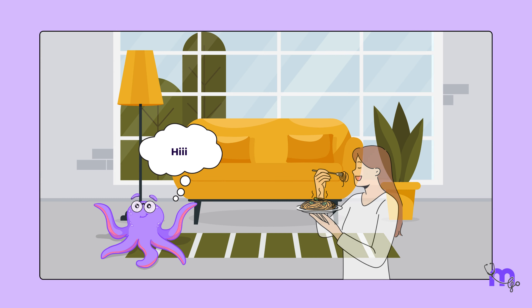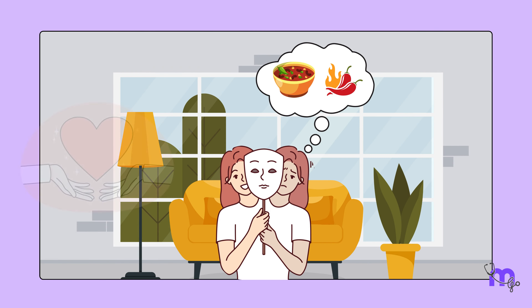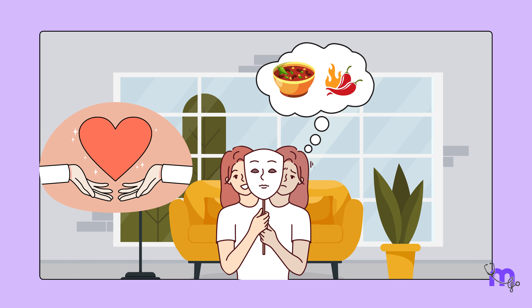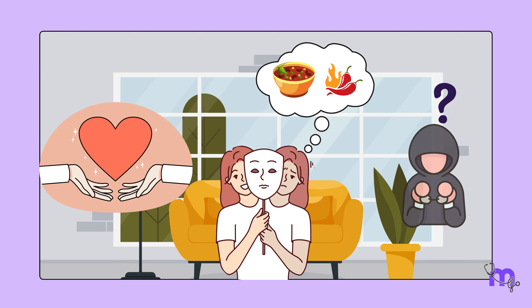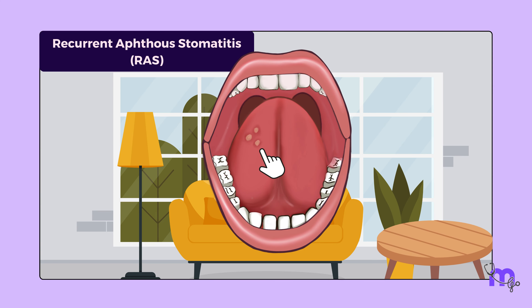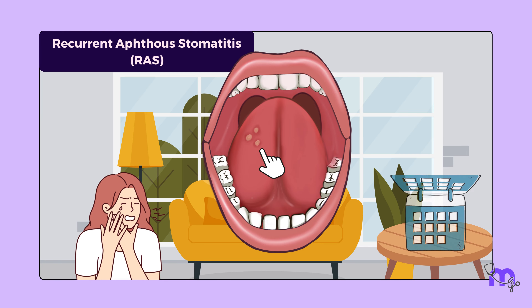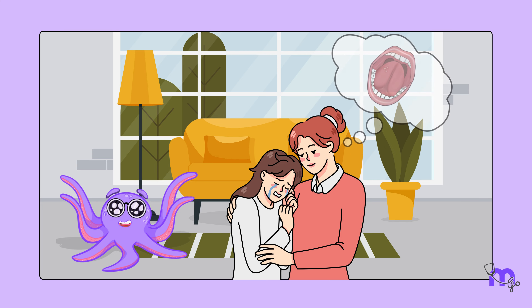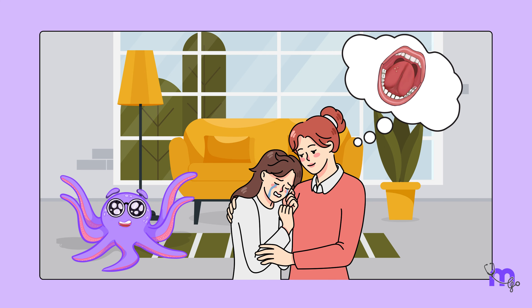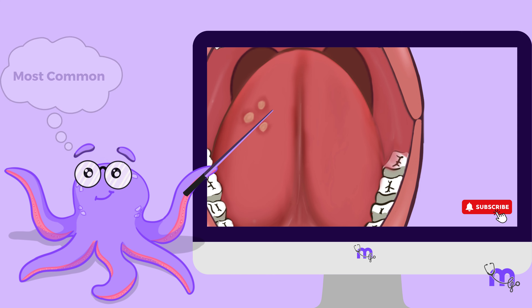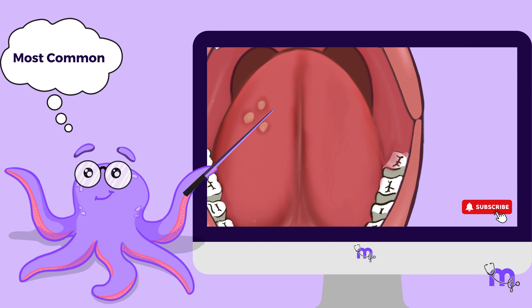Hi everyone. Meet Maya, a 15-year-old with a passion for spicy food. It was a love affair that brought her both joy and occasional betrayal. The culprit? Recurrent aphthous stomatitis, or RAS for short — canker sores that take up residence in her mouth every few months. Her mother, who also suffered from RAS, calmly reassured her each time they appeared. This video dives deep into the most common ulcerative disease of the oral cavity: recurrent aphthous stomatitis.